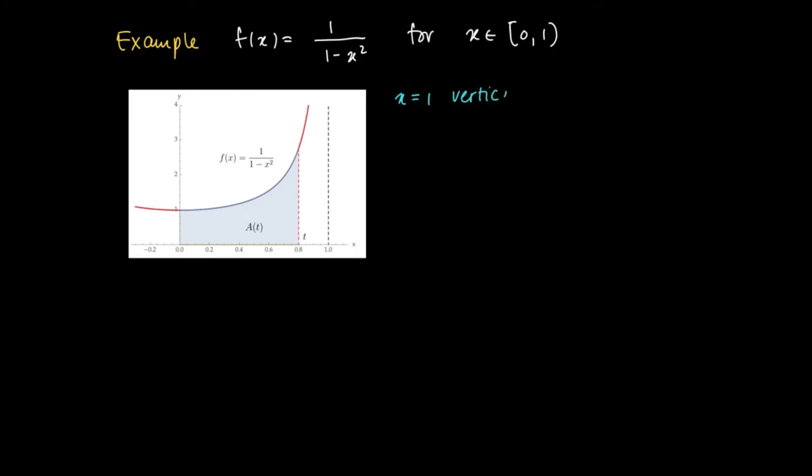We see clearly in the picture that this function has a vertical asymptote at x = 1. So we may wonder whether we can give meaning to the idea of the area under the graph of f between the lines x = 0, x = 1, and y = 0. When t goes to 1, does the area converge?